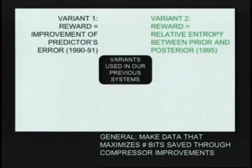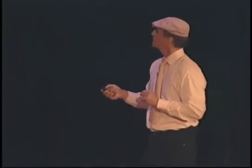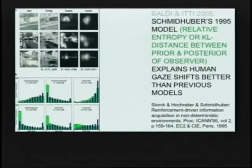We've had a whole bunch of different implementations of the principles I just explained — we didn't start that yesterday. In 1990, the first systems of this type were implemented using very simple prediction machines, artificial neural networks, to become better predictors and better compressors of the data history. And recently, two researchers in California took the 1995 model and found that it explains eye movements of humans better than previous models. Why are you looking here and not there? Because for some reason it's more interesting there. What does more interesting mean? Because looking there leads to a new input with a pattern that has something interesting — because there is something you don't know exactly yet and where you can still make a little bit of learning progress.